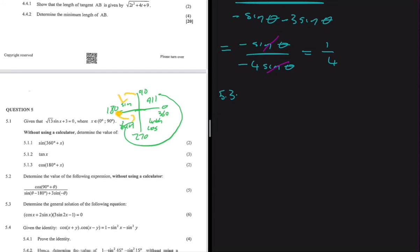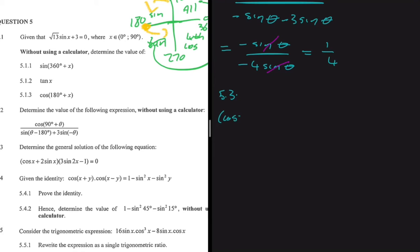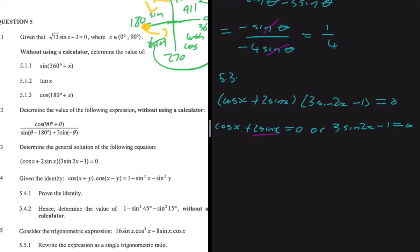Now let's do 5.3. We need to determine the general solution of: (cos x + 2·sin x)(2·sin x - 1) = 0. If you're multiplying two expressions and getting 0, then one of them must equal zero. So either cos x + 2·sin x = 0, or 2·sin x - 1 = 0.